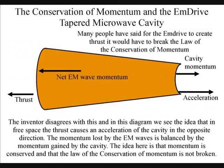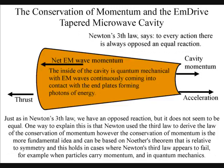Many people have said that for the EmDrive to create thrust it would have to break the law of the conservation of momentum and Newton's third law, which states that to every action there is an opposite and equal reaction. The inventor disagrees with this, and in this diagram we see the idea that in free space thrust causes an acceleration of the cavity in the opposite direction. The momentum lost by electromagnetic waves is balanced by the momentum gained by the cavity, so momentum is conserved and the law of conservation of momentum is not broken.